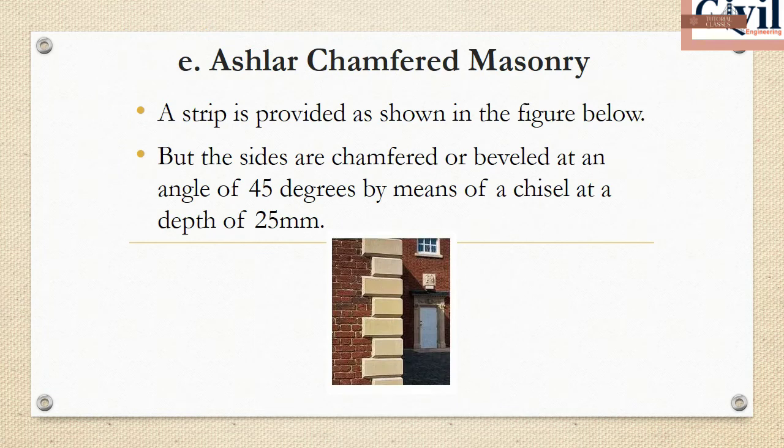The last category is Ashlar Chamfered masonry. In this method, a chamfer or bevel is provided at the edges of the strips. The chamfering angle is 45 degrees and the depth is 25 mm.